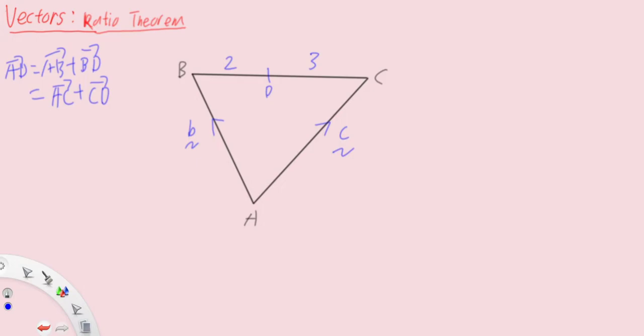A simpler way is the idea of using the ratio theorem and it's quite intuitive. If vector AD is simply vector B times the opposite number, so we have 3 of vector B plus vector C times 2, so 2 of vector C over 2 plus 3.